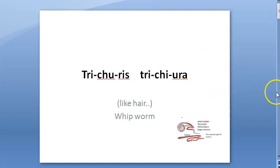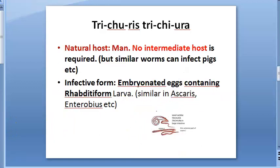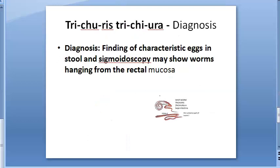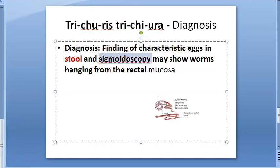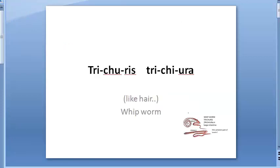To summarize: Trichuris trichiura is a nematode helminth called whipworm. It inhabits the large intestine, especially the cecum. The natural host is man; the infective form is the embryonated egg containing rhabditiform larva; there is no intermediate host. For diagnosis, stool examination and sigmoidoscopy are the two important methods. Treatment is mebendazole or albendazole.